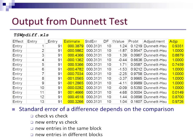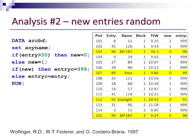It's important to note that there are different standard errors depending on what you're comparing. Comparing one check versus another check is the most precise comparison. New entries versus the check, or entries within the same block, will be more precise than comparing new entries located in different blocks.